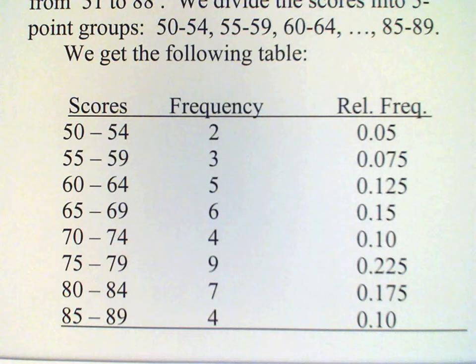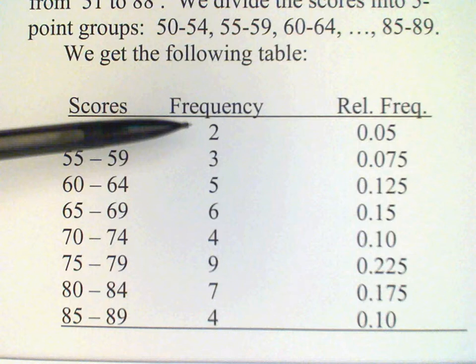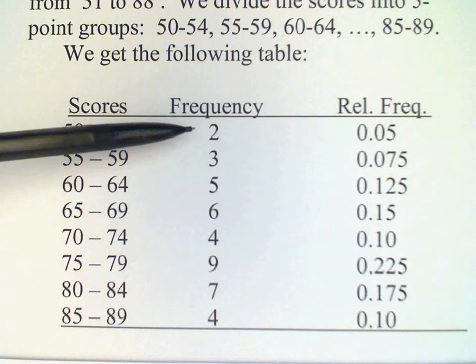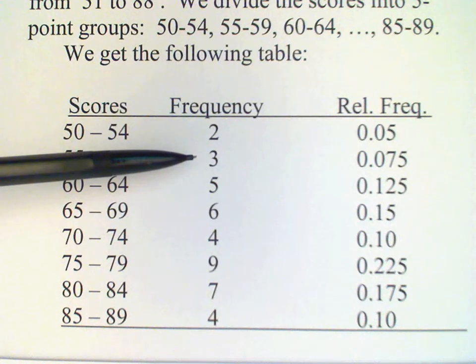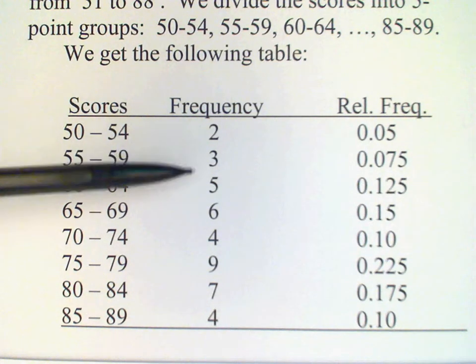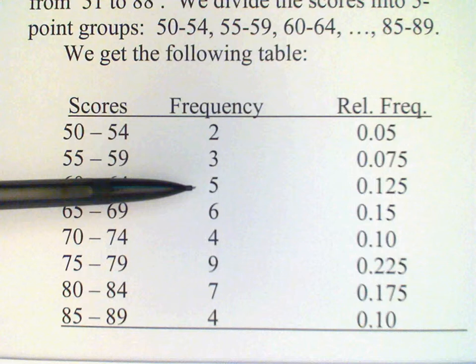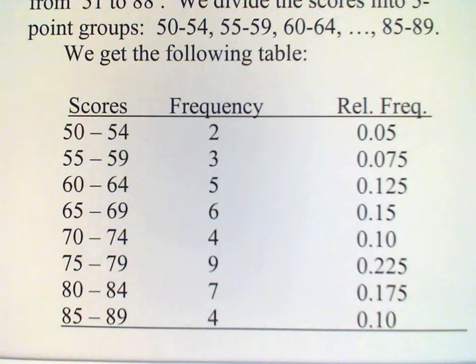And then for each of these classes, we have a frequency, or the number of scores that falls into each one of these classes. So 2 in 50 to 54, 3 in 55 to 59, and so on. And we know that the total number of scores is 40.